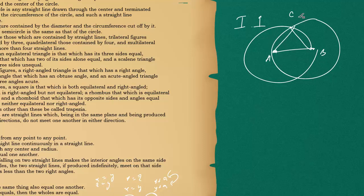For the first circle, we know that the two radii are equal, because the definition of a circle says all radii are equal. He has defined this. So we can say AB equals AC. Again, in the second circle, the radii are also equal — how do you know? He defined it as Definition 15. So that means AB equals BC.